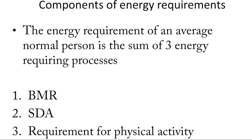Now coming to the most important part — how to calculate the calories required per person per day. This is calculated using three components: BMR, SDA, and physical activity. Physical activity is classified into three types: sedentary, moderate, and heavy workers.